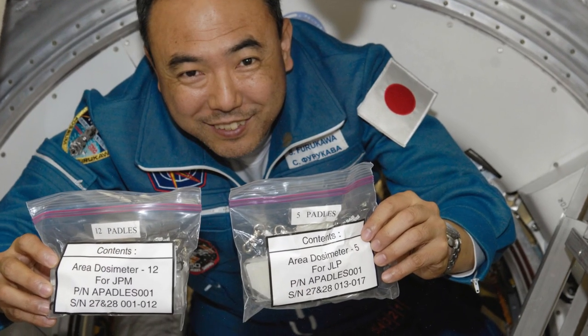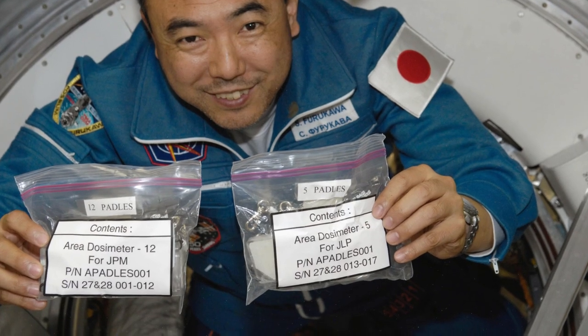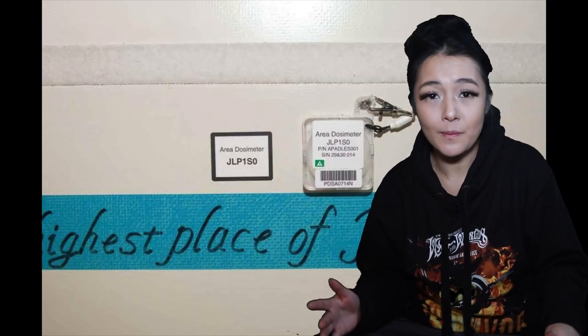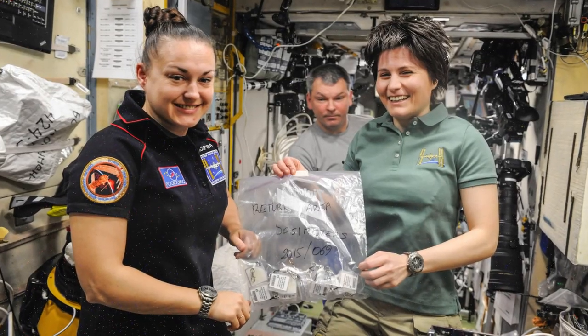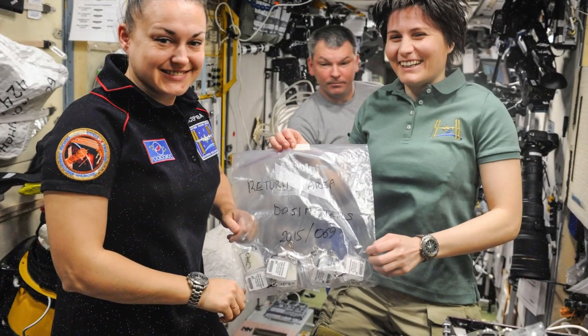Astronauts wear dosimeters, which are devices that measure their personal exposure to ionizing radiation. It sends out a warning if they reach dangerous levels.